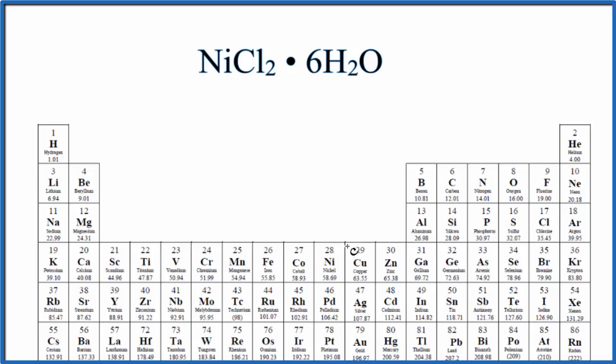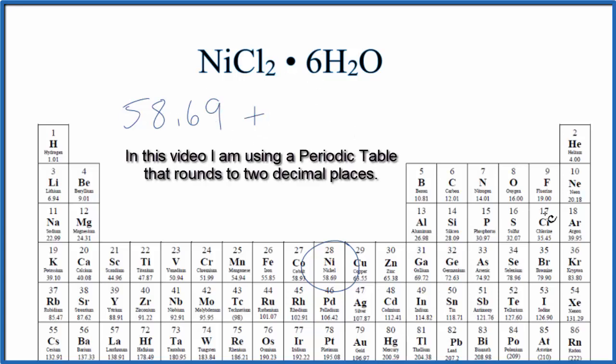On the periodic table, we find nickel, which is 58.69 grams per mole. We won't write that each time. Let's write that at the end. Plus chlorine, 35.45 grams per mole.